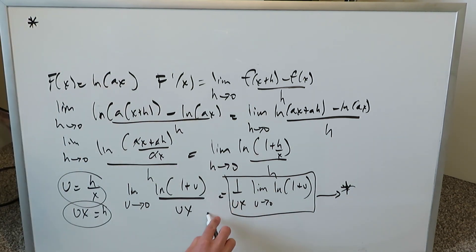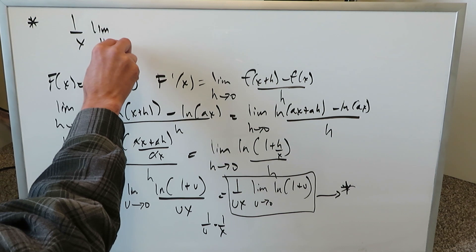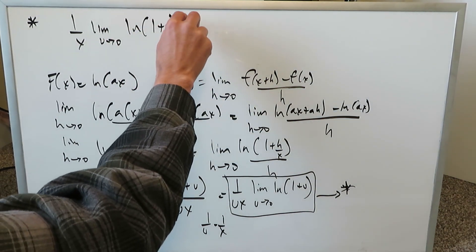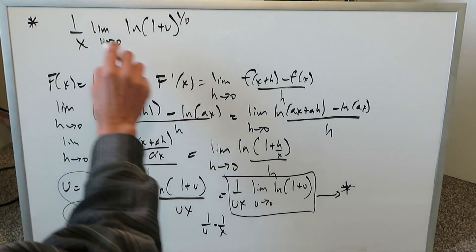You can separate 1 over ux as 1 over u times 1 over x. And I'm only looking at this 1 over u component now. 1 over x will stay outside. 1 over x limit as u approaches 0. I have natural log(1 plus u) to the power of 1 over u. How have I done this? It's using the properties of logs. Think about it.